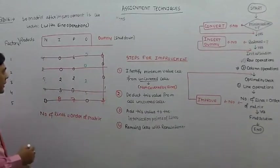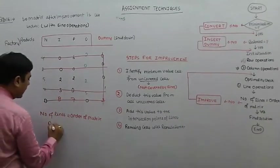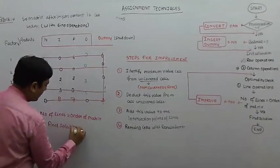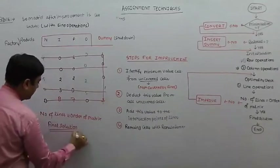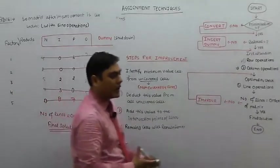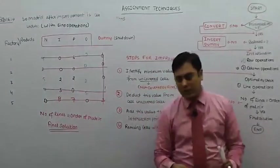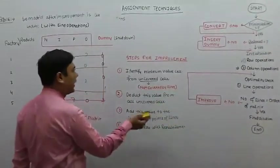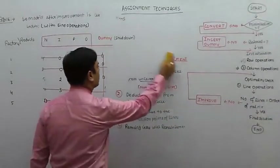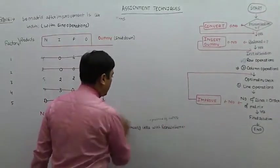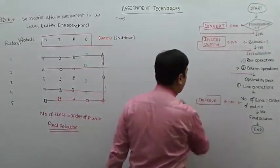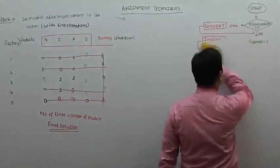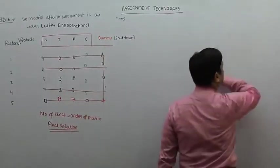Now we can say this is the final solution. Final solution aane ke baad humein kya karna padta hai — we have to prepare an assignment matrix. To fata fat se mere saath assignment matrix banaenge. Improvement wale steps ki heading mita dete hain — inki zaroorat nahi.